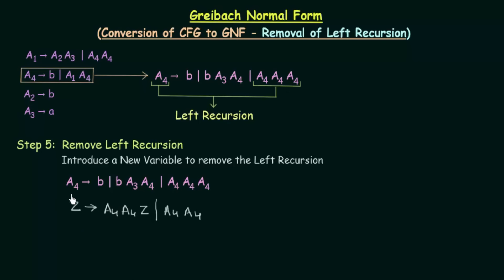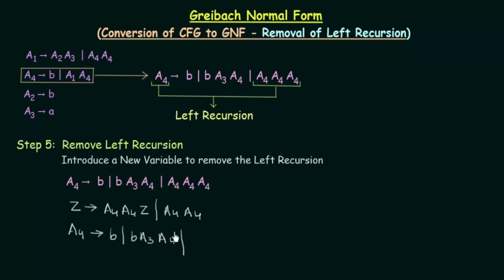Now we have to rewrite A4 using this new variable Z. What you have to do is take A4 and write the original productions as they are once, and then write them along with the new variable Z once — this way we can avoid the left recursion. So A4 gives B, B, A3, A4 and also B, Z and B, A3, A4, Z. This is the new production of A4 that we have.